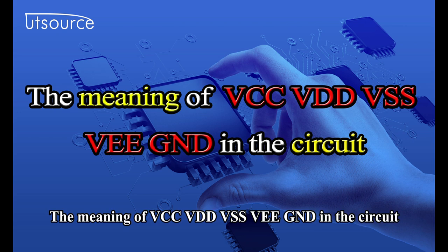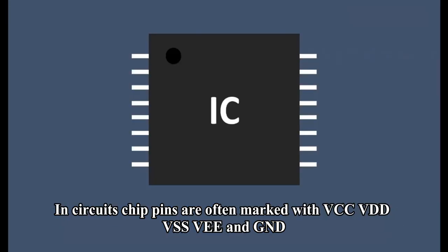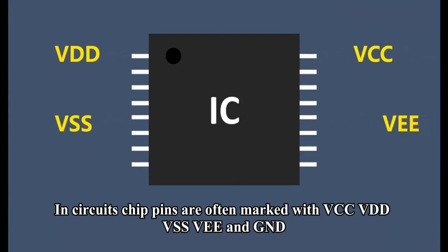The meaning of VCC, VDD, VSS, VEE, and GND in the circuit. In circuits, chip pins are often marked with VCC, VDD, VSS, VEE, and GND.